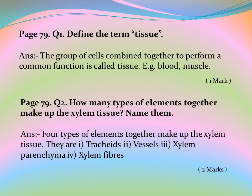Page 79, Question 2: How many types of elements together make up the xylem tissue? Name them. Answer: Four types of elements together make up the xylem tissue. They are tracheids, vessels, xylem parenchyma, and xylem fibers.